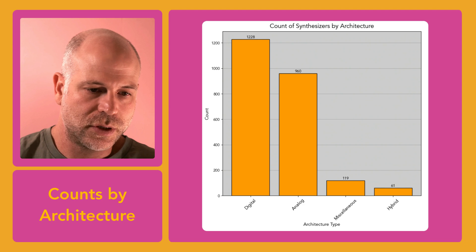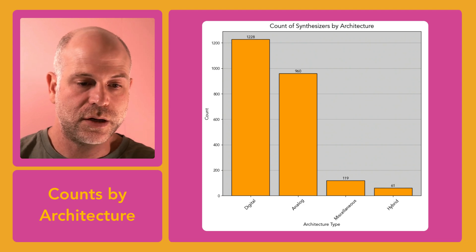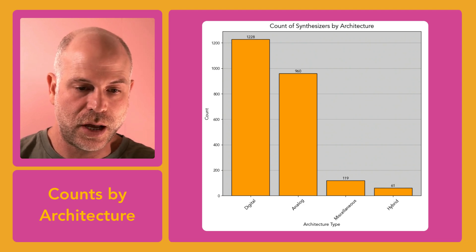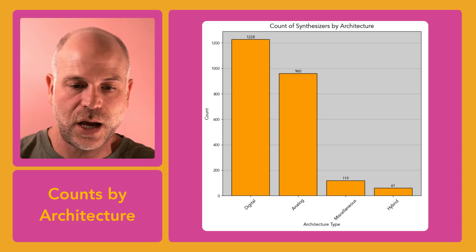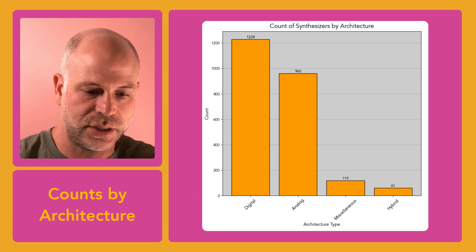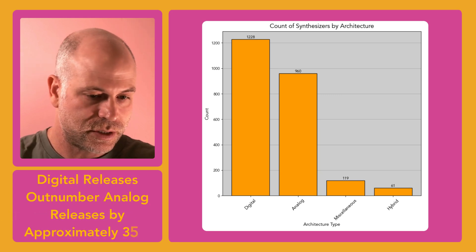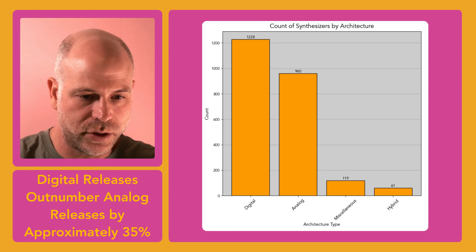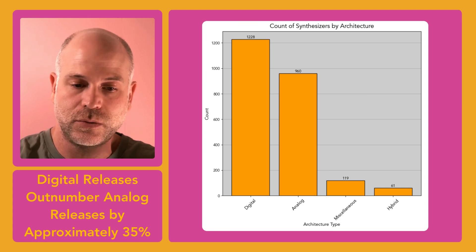Next, I wanted to look at counts by architecture. The architecture attribute categorizes hardware entries to analog, digital, hybrid, or miscellaneous. First of all, most of the entries are digital or analog. Notably, there's like 35% more digital releases than analog releases, which obviously made me want to look at digital versus analog.